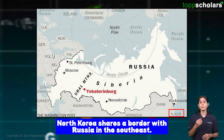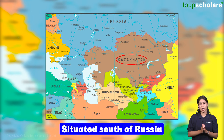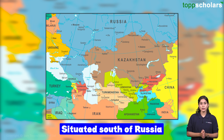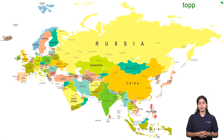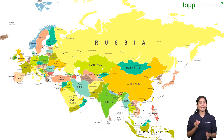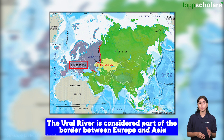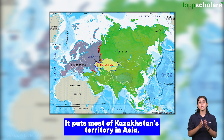North Korea shares a border with Russia in the southeast. The next country is Kazakhstan. It is situated south of Russia and is bordered by Russia to the west, the Caspian Sea to the southwest, and Turkmenistan, Uzbekistan, and Kyrgyzstan to the south. It shares contiguous territory with Russia in both Europe and Asia. The Ural River flowing into northwest Kazakhstan is considered part of the border between Europe and Asia, putting most of Kazakhstan's territory in Asia.